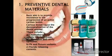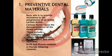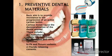The dental biomaterials which prevent the propagation of tooth decay or dental caries are called preventive dental materials. These include chemotherapeutic agents like toothpaste, mouthwashes, and cavity varnishes. They may also include pit and fissure sealants and fluoride releasing cements like glass ionomer cement.